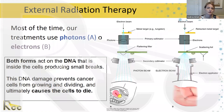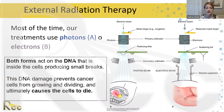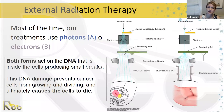Both forms of treatment act on the DNA inside the cells. They produce small breaks in the DNA, which prevents cancer cells from growing and dividing, and ultimately causes them to die — either quickly after treatment or within a reasonably short period of time.